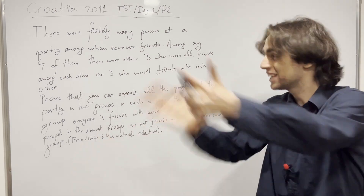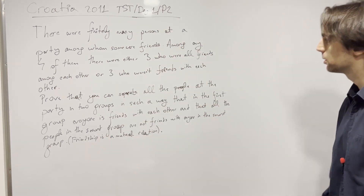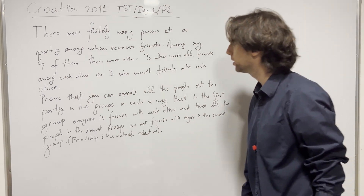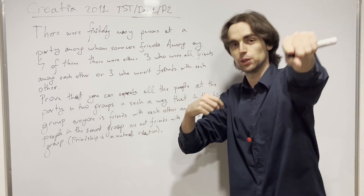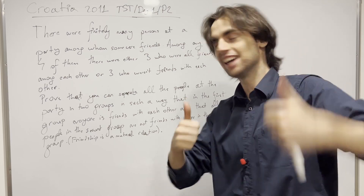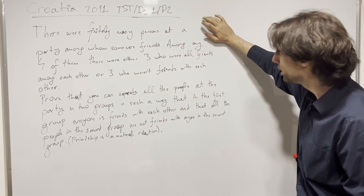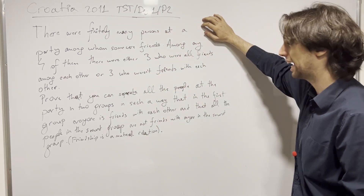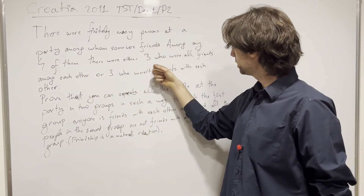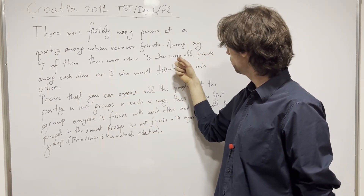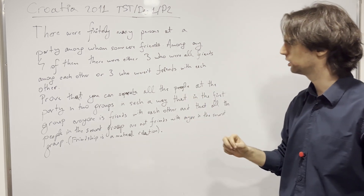And now without further ado, let's begin! So, what do we have? Finitely many persons at a party — some are friends, and friendship is mutual: if I'm friends with you, then you're friends with me. The big condition is: among any 4 of them, there are 3 who were all friends with each other, or 3 who weren't friends with each other.